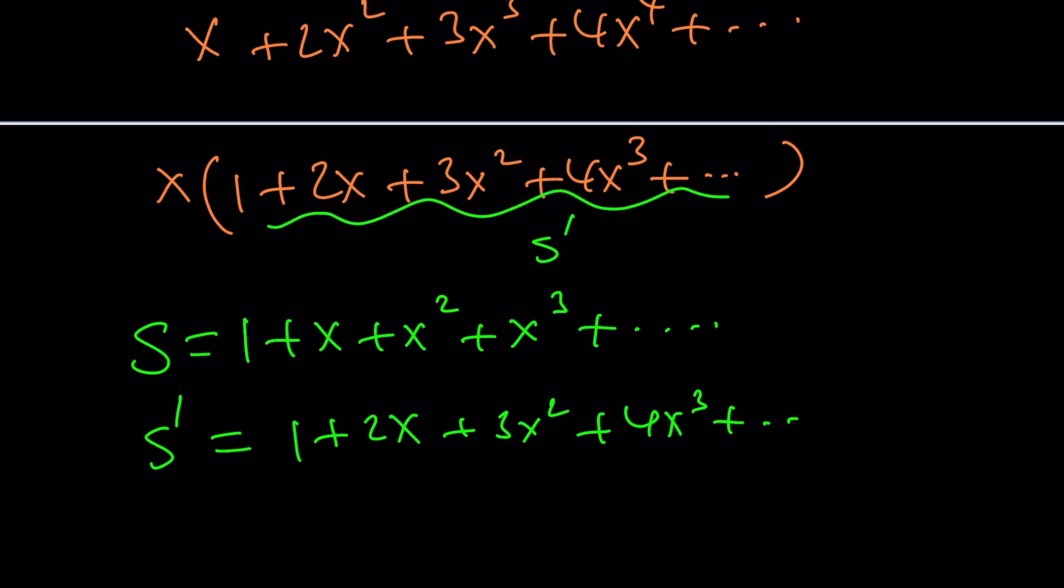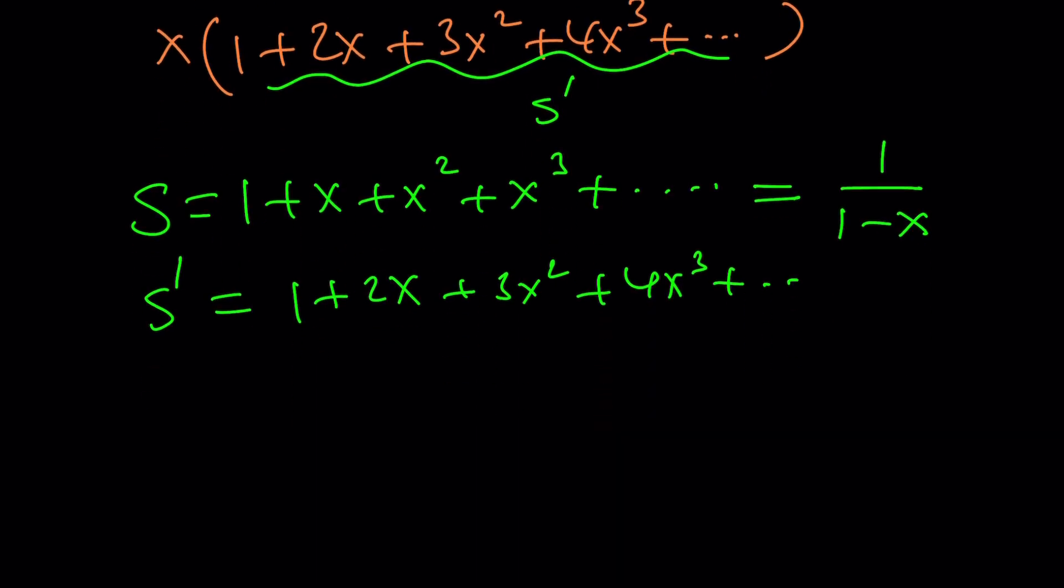But the million dollar question is: what is s? We have an answer. That's an infinite geometric series. If x is between zero and one or negative one and one, it's one over one minus x. If you differentiate it, you get one over one minus x squared. The negative from the negative x and the power cancel each other out. Isn't that cool?